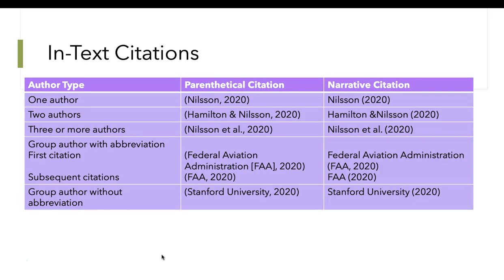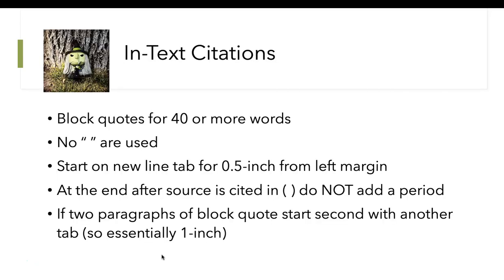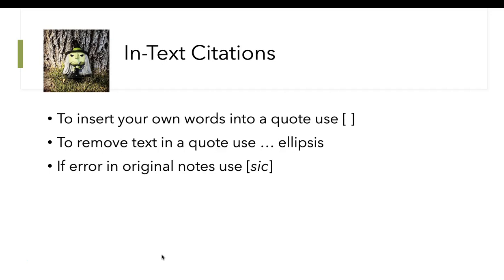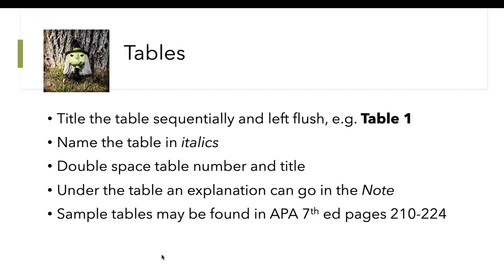Here are some examples of in-text citations when you have one, two, or three or more authors. If you have a block quote that is 40 or more words, you do not use quotation marks — start a new line and tab it. At the end, after referencing the source in parentheses, never add a period. Should you have two paragraphs of a block quote, the second paragraph starts another 0.5 inch in — so two tabs, essentially one inch from the left. If you insert your own words into a quote, use square brackets. If you take words out because it's too lengthy, use ellipses — those three little dots. And if you see a typo in the original, put 'sic' italicized in your square brackets.